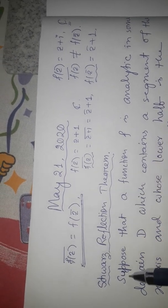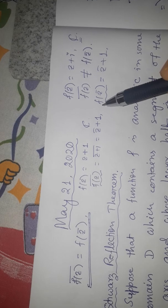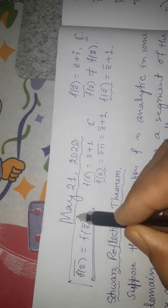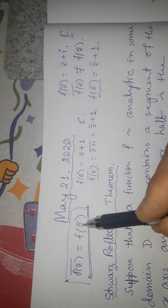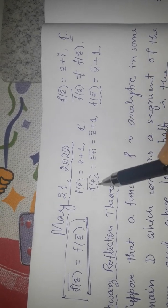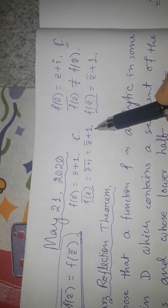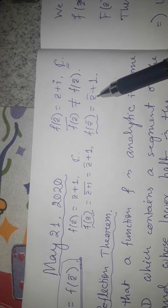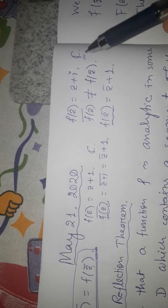We are going to prove an important theorem known as the Schwarz Reflection Theorem. There are some analytic functions in some domains which satisfy the property that the conjugate of f(z) equals f(z-conjugate). For example, if f(z) = z + 1, which is analytic everywhere in the complex plane C, we see that the conjugate of f(z) equals f(z-conjugate), so this property is satisfied.